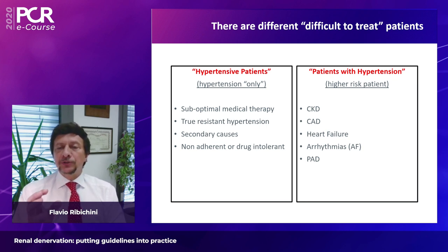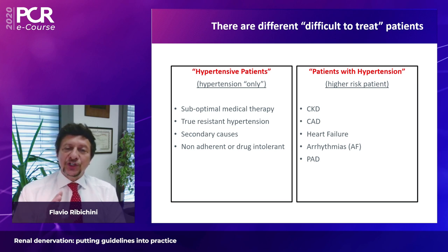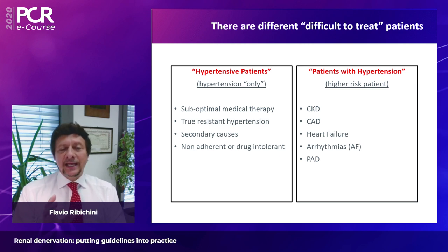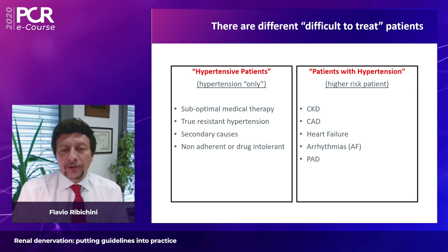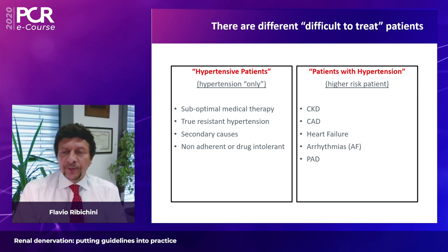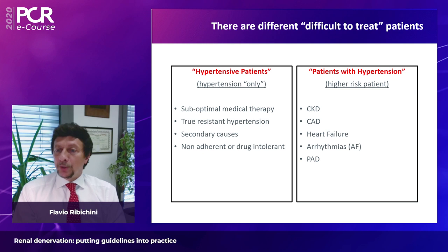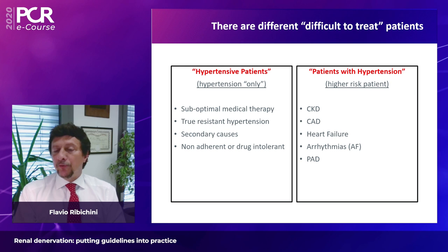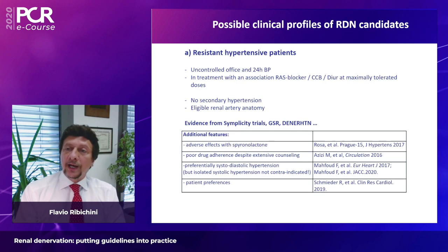From a personal perspective, there are two types of hypertensive patients. One is a younger patient with hypertension alone — potentially truly resistant, or under suboptimal therapy, or with secondary causes, or simply non-adherent. The other is an older patient with hypertension on top of other serious conditions such as chronic kidney disease, coronary artery disease, heart failure, arrhythmias, or peripheral artery disease.